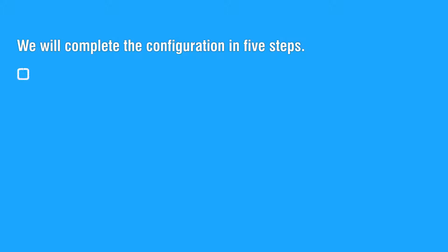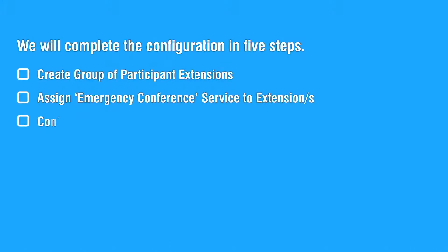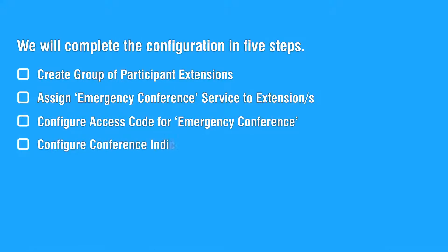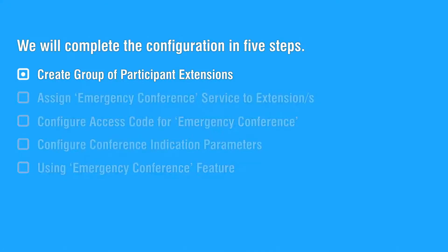We will complete the configuration in 5 steps: create group of participant extensions, assign emergency conference service to extensions, configure access code for emergency conference, configure conference indication parameters using the emergency conference feature. Let us start with the first step.